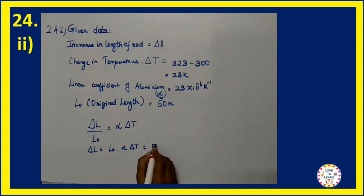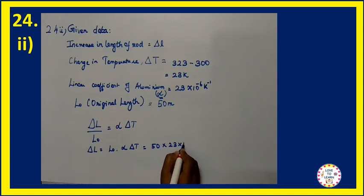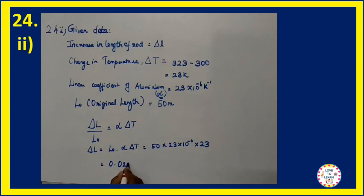Substituting the values: 50 into 23 into 10 power minus 6 into 20. This gives the value 0.023 meter.